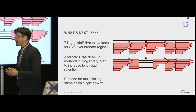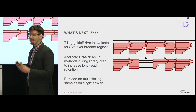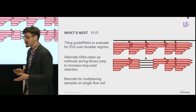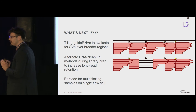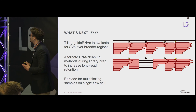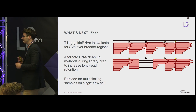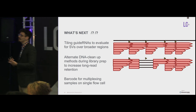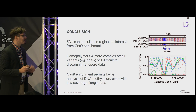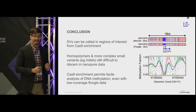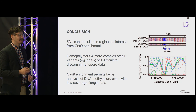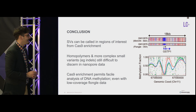Moving forward, when looking at structural variants we currently need to know roughly where they are. We want to tile guide RNAs across larger regions to search for structural variants in a more agnostic way over wider regions — targeting megabases rather than just 20–30 kb. We also want to alternate cleanup steps to recover more long reads and to use barcoding so we can include multiple samples on a single flow cell, increasing throughput and reducing cost. In summary, this method can be used to look for structural variations, single nucleotide changes — though homopolymeric regions remain a challenge — and DNA methylation at regions of interest.